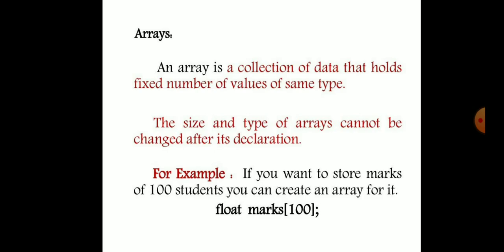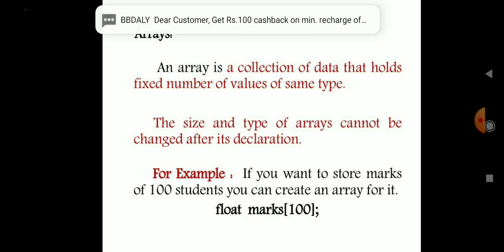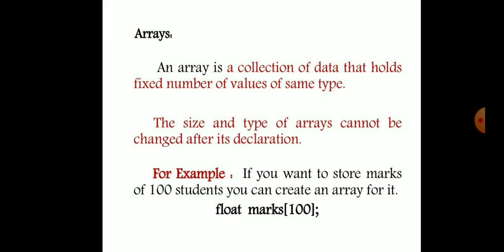So what is the array? Array is a collection of data that holds a fixed number of values of the same type. The size and type of an array cannot be changed after its declaration. Array is defined as the collection of similar types of data items stored at contiguous memory locations. Arrays are derived data types in C programming language which can store primitive types of data such as integer, character, double, float, etc. It also has the capability to store derived data types such as pointers, structures, etc. The array is the simplest data structure where each data element can be randomly accessed by using the index number.